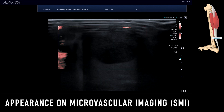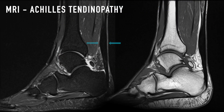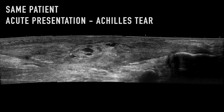Here are a few more examples of Achilles tendon pathology. These sagittal MRI images show thickening of the Achilles tendon in keeping with Achilles tendinopathy. The same patient subsequently presented acutely with pain in the posterior lower leg. Urgent ultrasound showed discontinuity of the Achilles tendon with a central area of mixed echogenicity material. Note the thickening of the tendon in keeping with the prior tendinopathy seen on MRI.